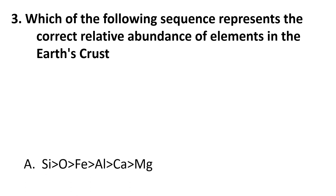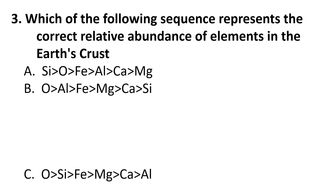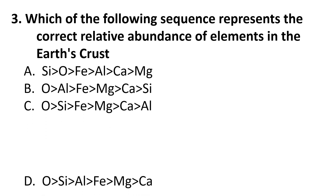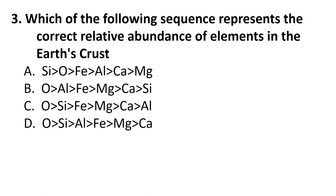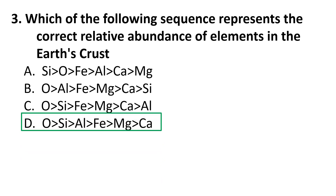Third question: Which of the following sequences represents the correct relative abundance of elements in the Earth's crust? The correct answer is D: Oxygen > Silicon > Aluminium > Iron > Magnesium > Calcium.